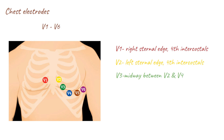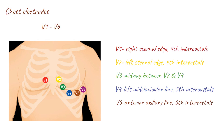V3 is placed at the left mid-clavicular line, 5th intercostal space. V5 is placed at the anterior axillary line, 5th intercostal space. V6 is placed at the left mid-axillary line, 5th intercostal space.